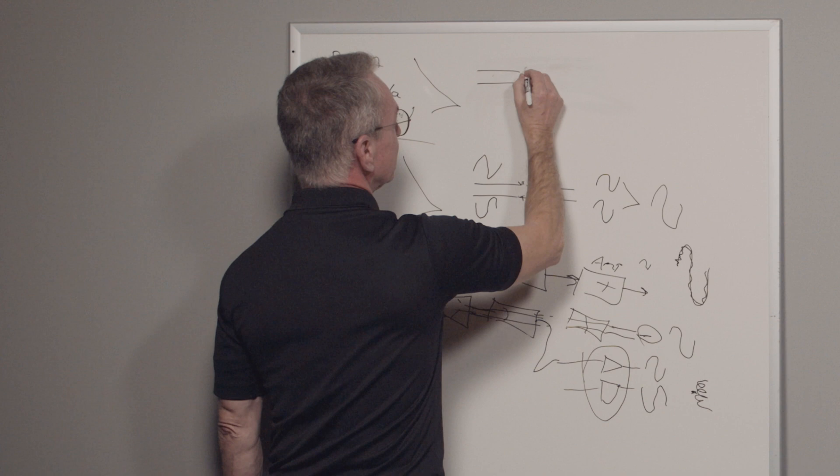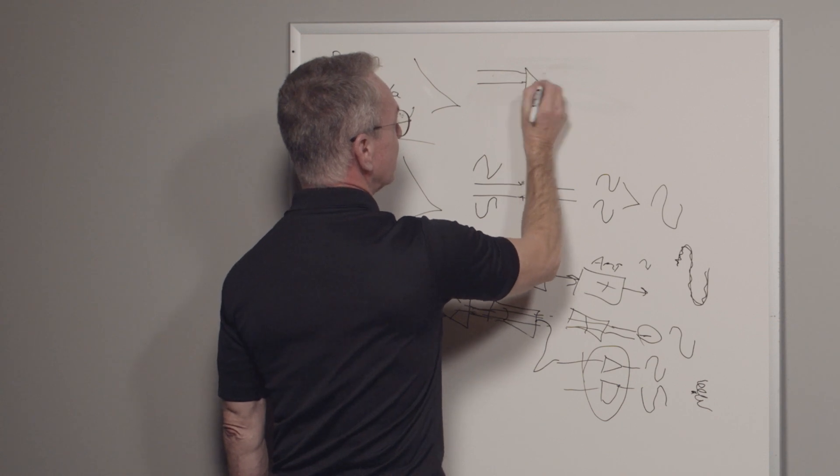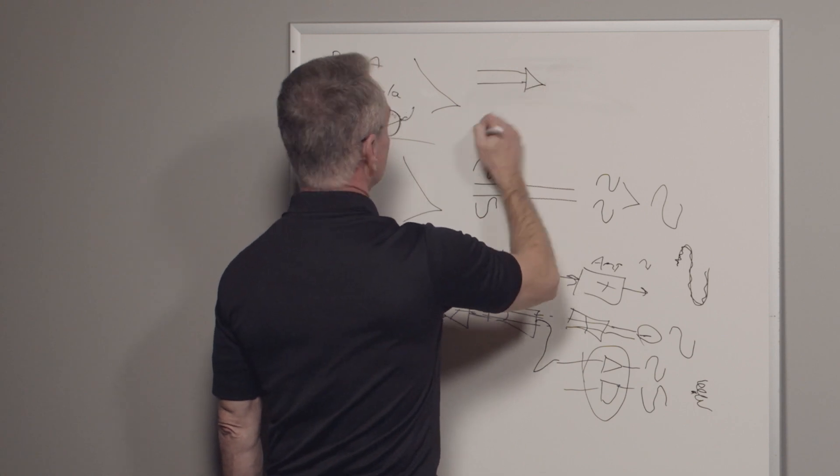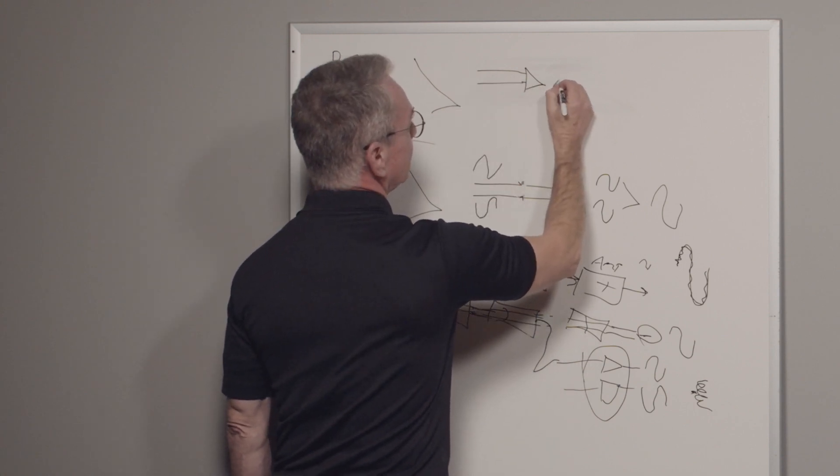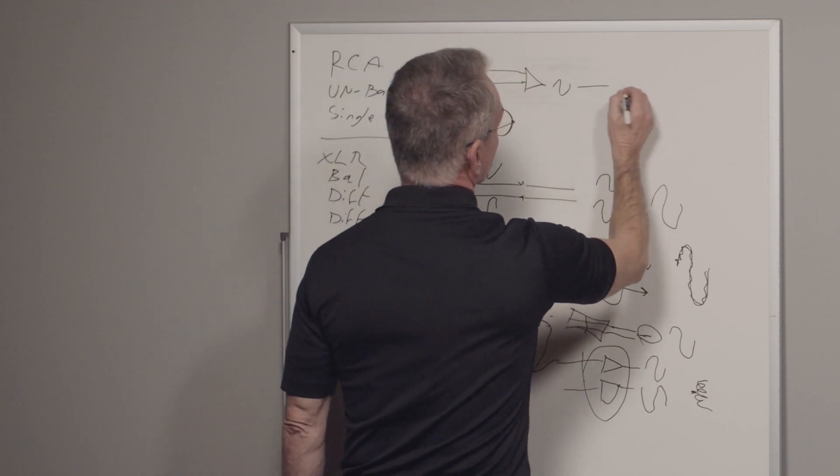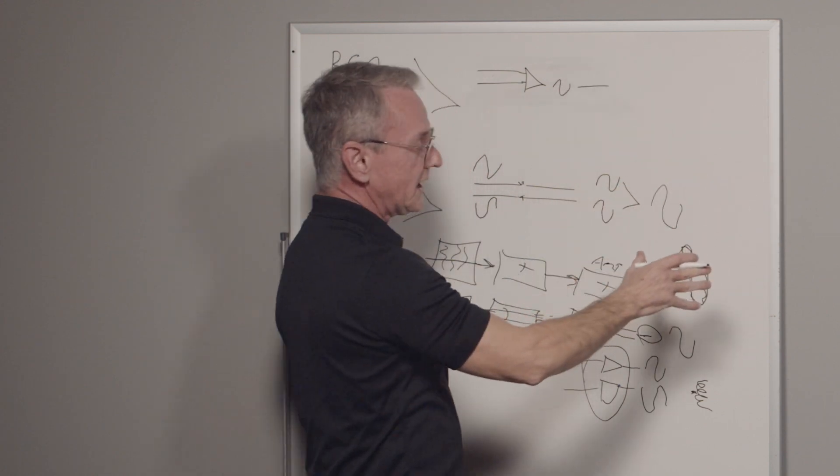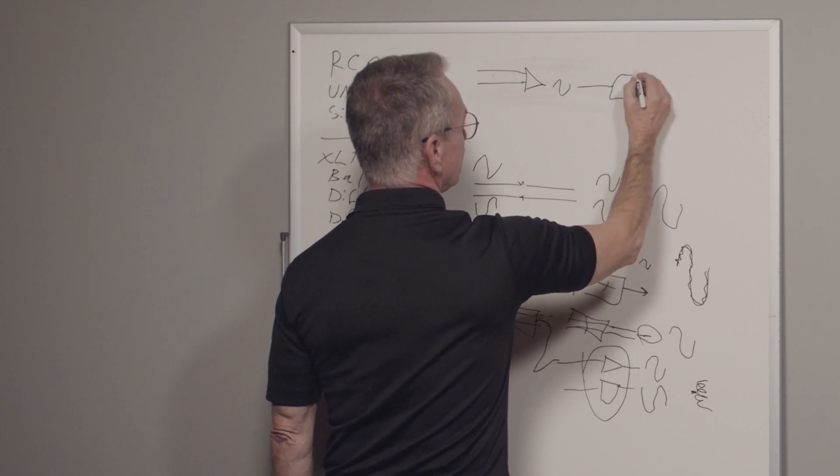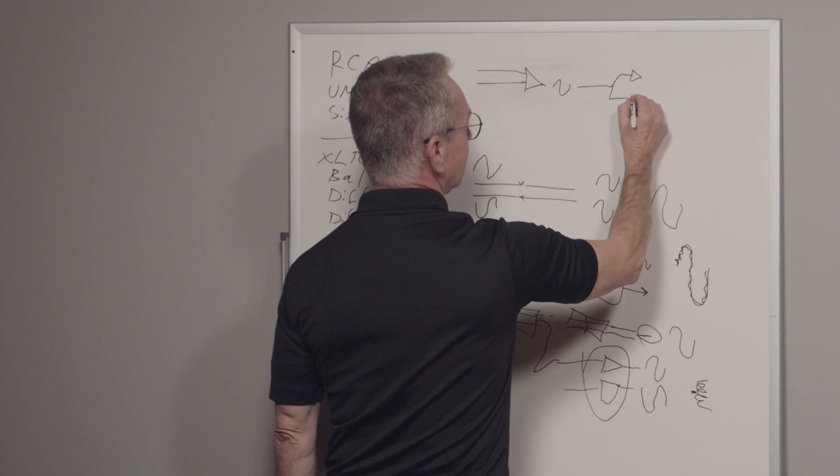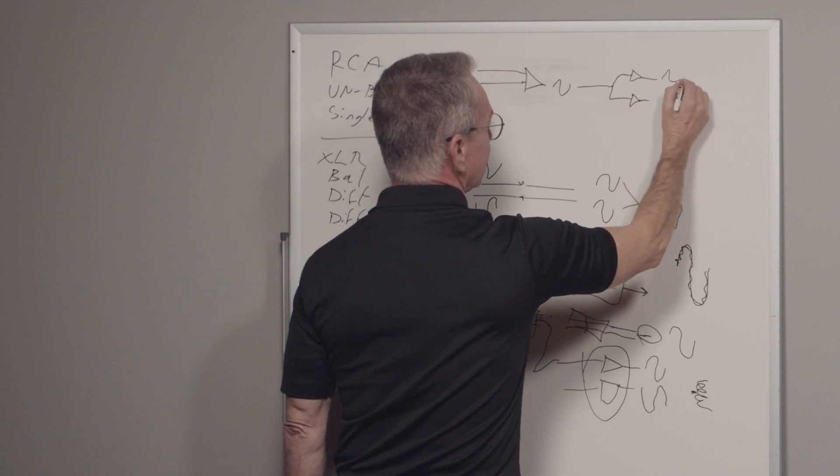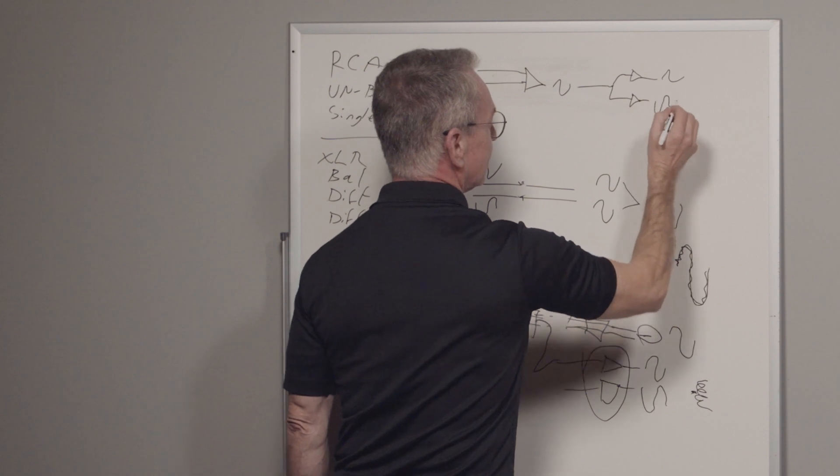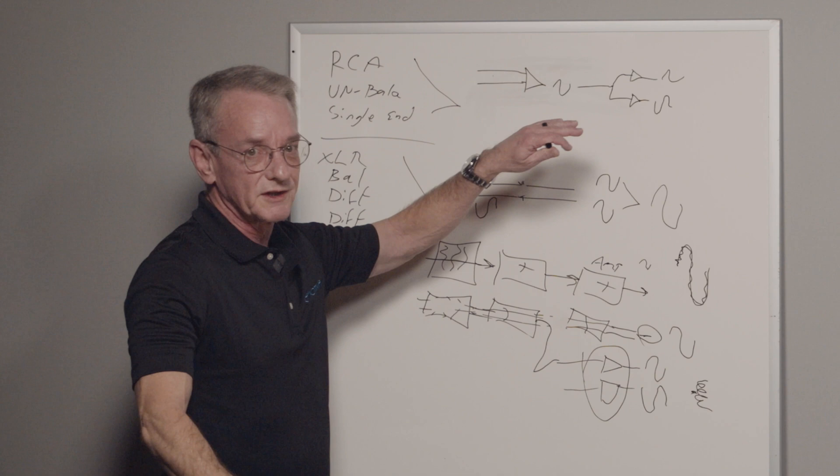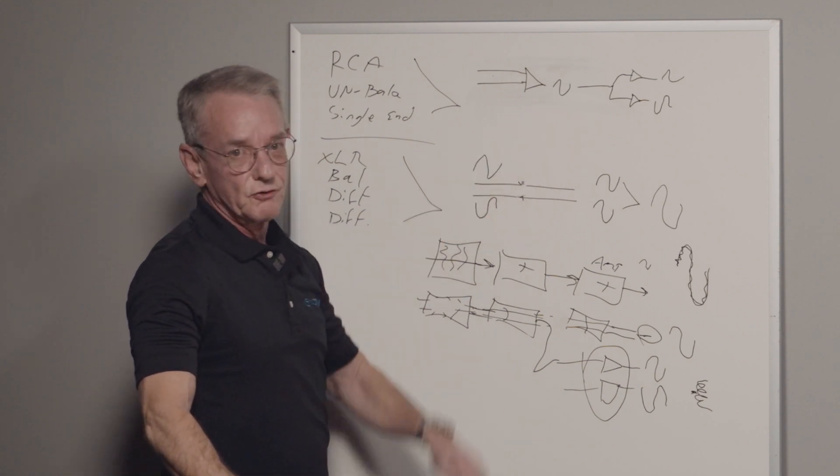You're going to come in with a balanced signal and what they're going to do is what they call, they're going to do a summing node inside the box and they're going to turn that balanced into an unbalanced signal. And then that's going to feed through the box until it gets to the far back end. And then just before it gets to the back end, then they're going to do a phase split and make it look like balanced coming back out again. Now, why do they do this? Because it doesn't, from a technical standpoint, that doesn't make sense.